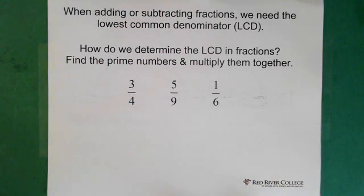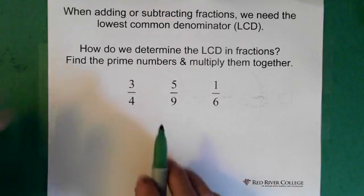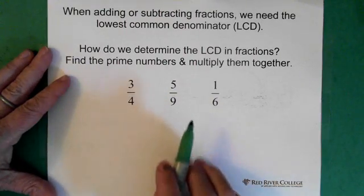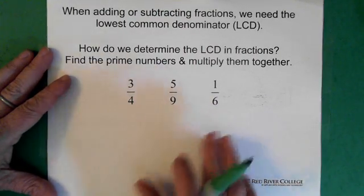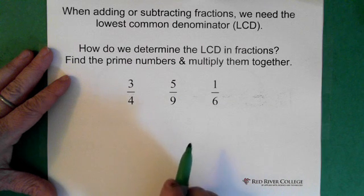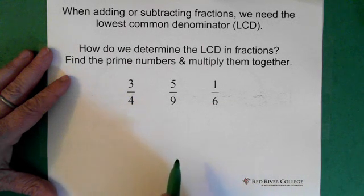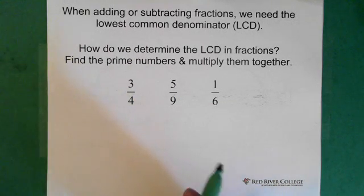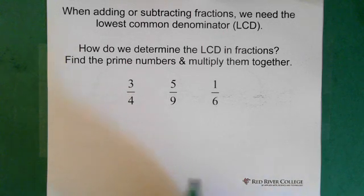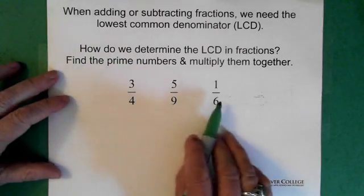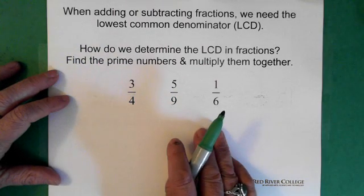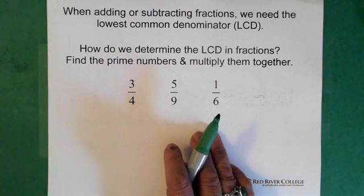Just as we would with normal fractions, when we're adding or subtracting algebraic fractions, we need a lowest common denominator. And normally, when we're finding the lowest common denominator, we're looking for the prime number. Usually when we're working with fractions, we're not really thinking about the fact we're looking for the prime number, but let's just talk about prime numbers for a minute here.